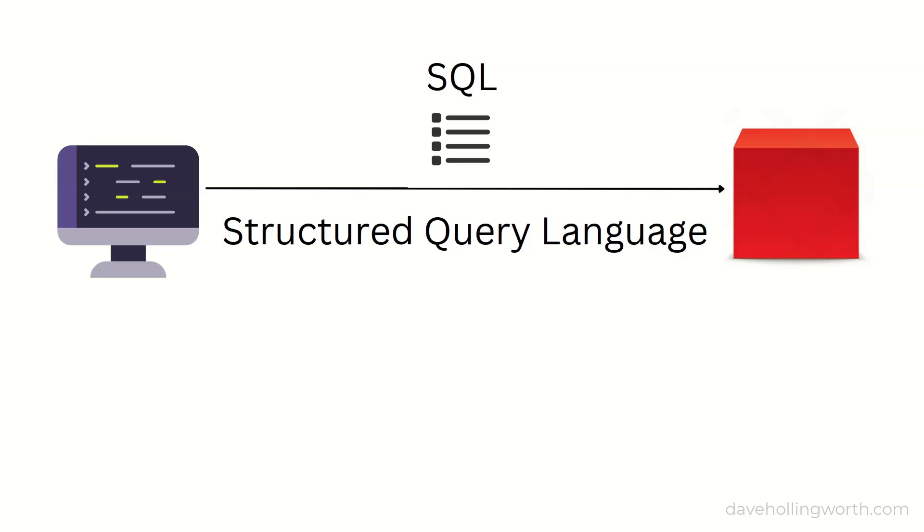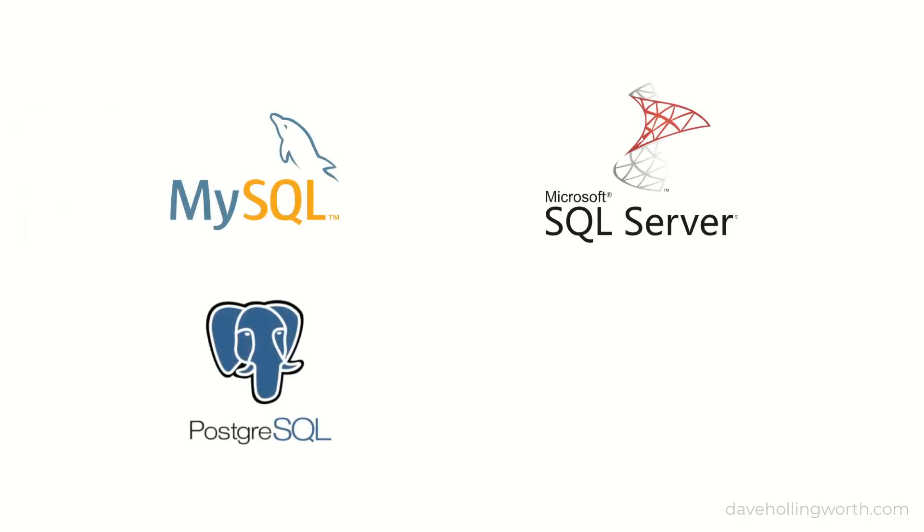There are many different relational database management systems, such as MySQL, Microsoft SQL Server, Postgres, and Oracle. Note that all of these support the standardized version of SQL to a greater or lesser extent. Most of the core SQL syntax will be the same in all of these systems. However, each DBMS has its own extensions to standard SQL.